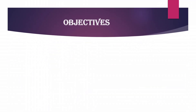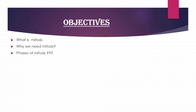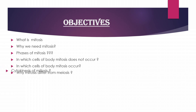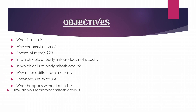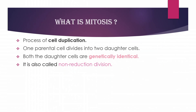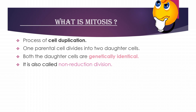First of all, let's see the main objectives of this topic. We will discuss: what is mitosis, why we need mitosis, phases of mitosis, in which cells mitosis does or doesn't occur, why mitosis differs from meiosis, cytokinesis of mitosis, what happens without mitosis, and how to remember mitosis easily. The last part is a quiz.